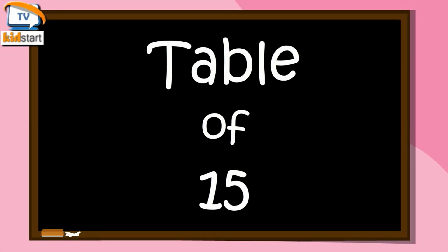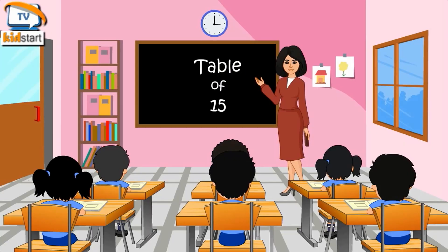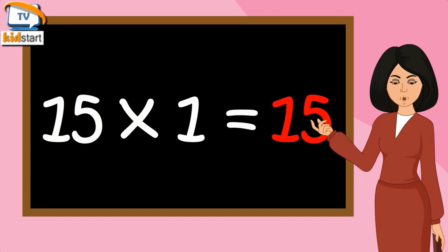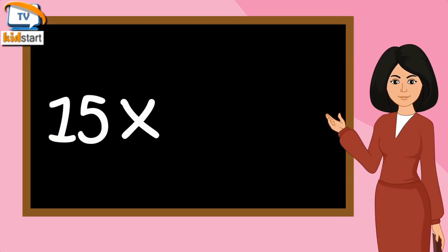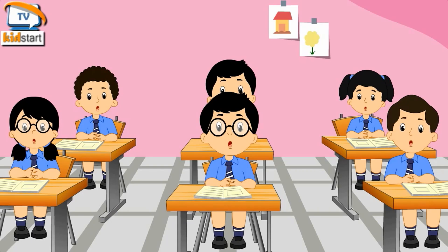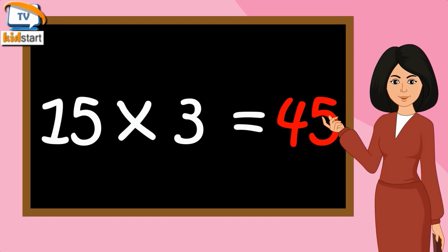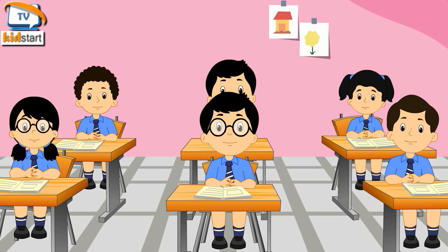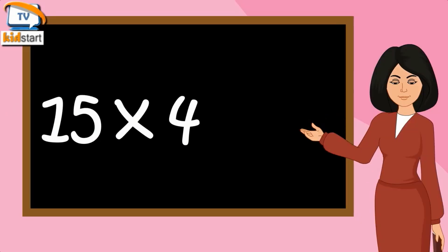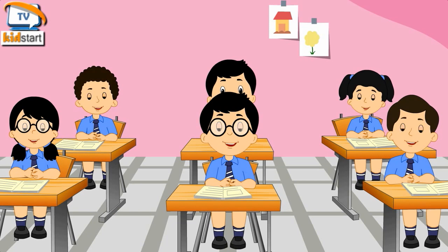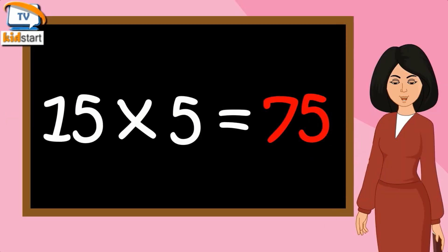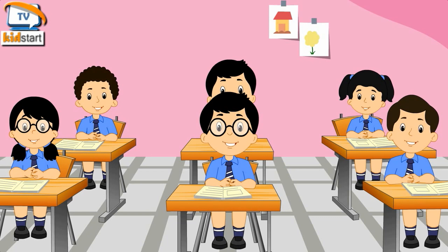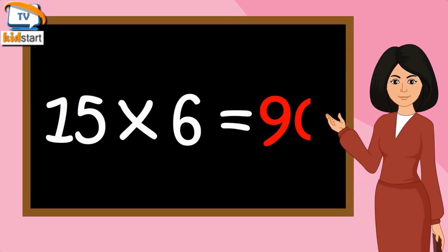Table of Fifteen. Fifteen ones are fifteen. Fifteen twos are thirty. Fifteen threes are forty-five. Fifteen fours are sixty. Fifteen fives are seventy-five. Fifteen sixes are ninety.